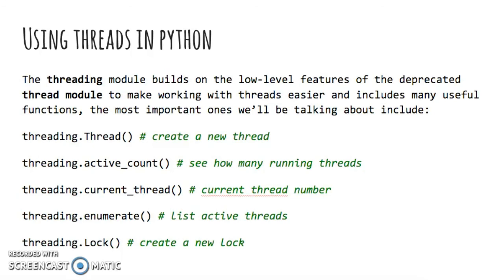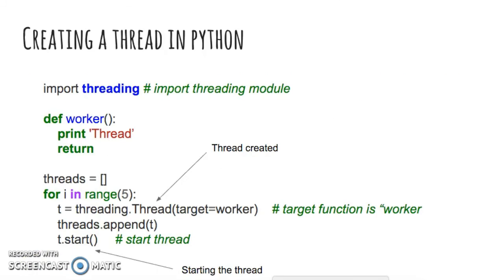The deprecated Python module named thread treats a thread as a function, while the newly supported module called threading is implemented in an object-oriented way, meaning it treats every thread as an object. So be careful when searching for examples online not to mix them up. Listed below are the important threading functions we will be discussing in this course. To get started with threads in Python, import the threading module.